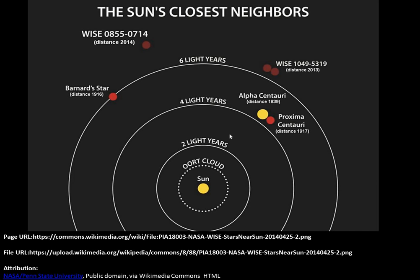This is the diagram which I found on Wikipedia about the sun's closest neighbors. I have given attribution and page URL and file URL so that it doesn't have any copyright issues. By the way, it was in the public domain in the United States, but as I am not in the United States I did it just in case.